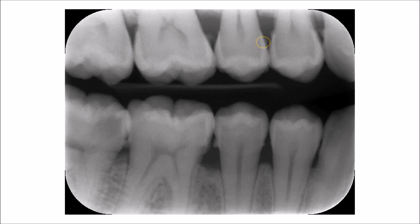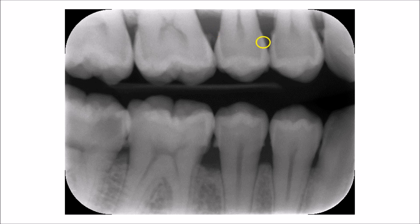In another bitewing radiograph, you can again see the typical positioning of calculus exactly beneath the cemento-enamel junction at the interproximal embrasures, all assuming the characteristic triangular radiographic projections. In this bitewing radiograph, calculus can be seen on many surfaces: the distal surface of the first molar, the mesial surface of the first molar, the distal surface of the second premolar, and the mesial surface of the second premolar.